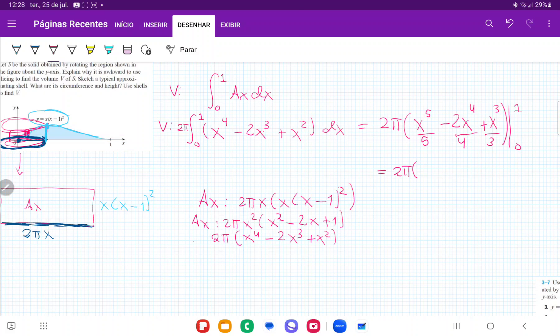And now we're just applying our boundary. We don't have to apply the lower boundary because the 0 just disappears. So we just apply 1. So that's 1/5 - 2/4 + 1/3.